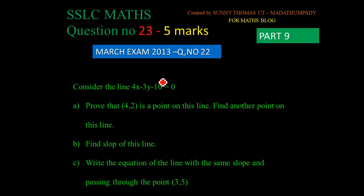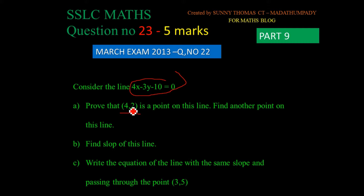Consider the line — we can draw a line. Prove that 4,2 is a point on this line. We substitute 4,2 into the equation and verify it equals 0.